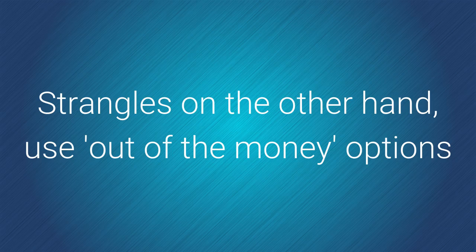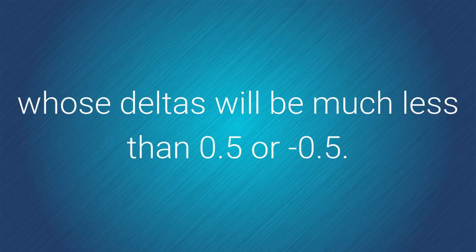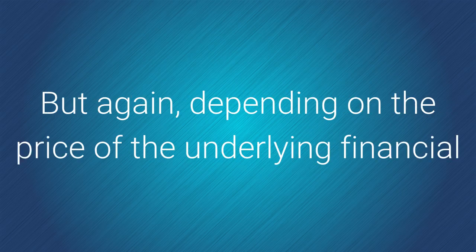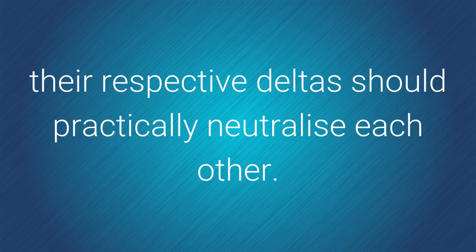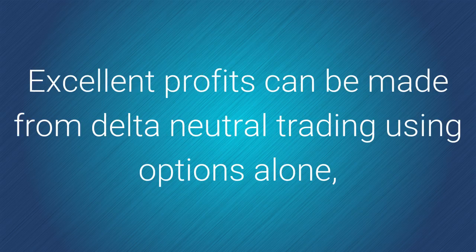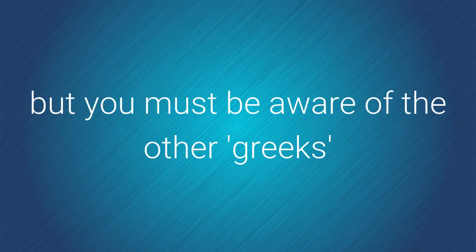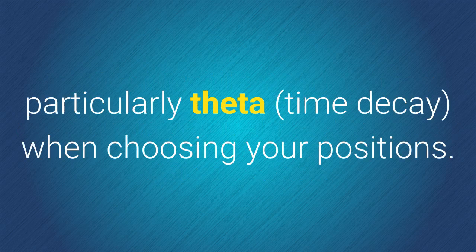Strangles, on the other hand, use out-of-the-money options, whose deltas will be much less than 0.5 or negative 0.5. But again, depending on the price of the underlying financial instrument in relation to the option strike prices when you buy, their respective deltas should practically neutralise each other. Excellent profits can be made from delta neutral trading using options alone, but you must be aware of the other Greeks — particularly theta, otherwise known as time decay — when choosing your positions.